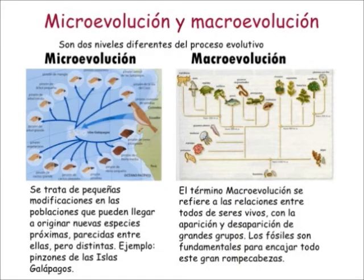Macroevolution can be divided into several points. The first is the change in the growth rate, which can occur through heterocrony — that is, changes in the timing or rhythms of developmental processes compared to those of the predecessor. On the other hand, allometry refers to changes within the same species, such as the relative size of body parts across individuals.